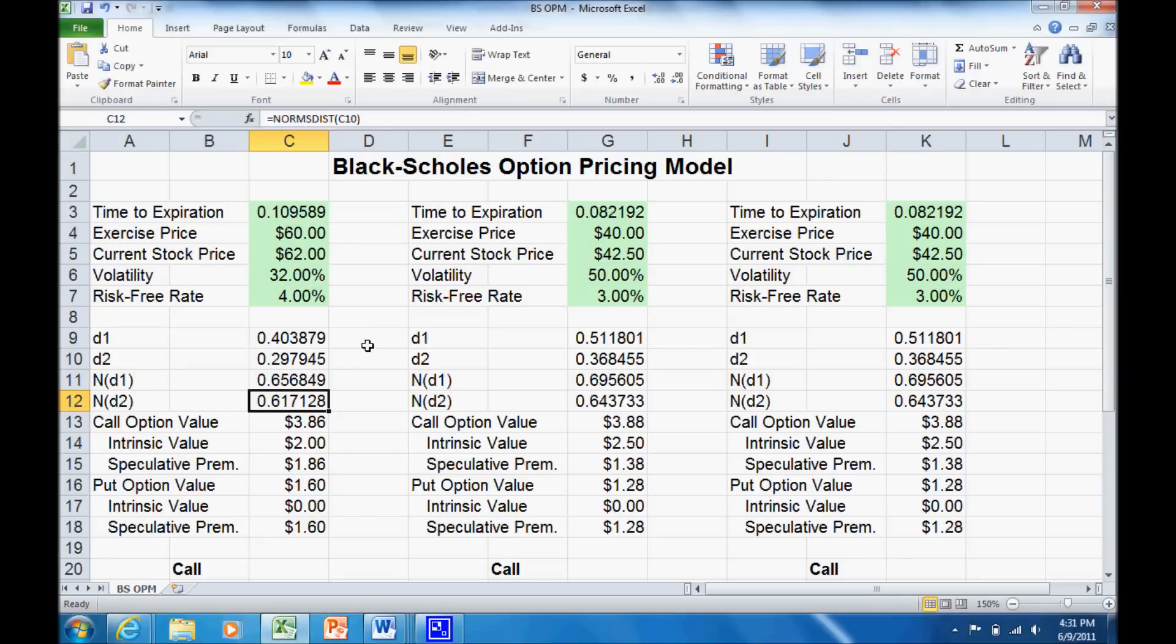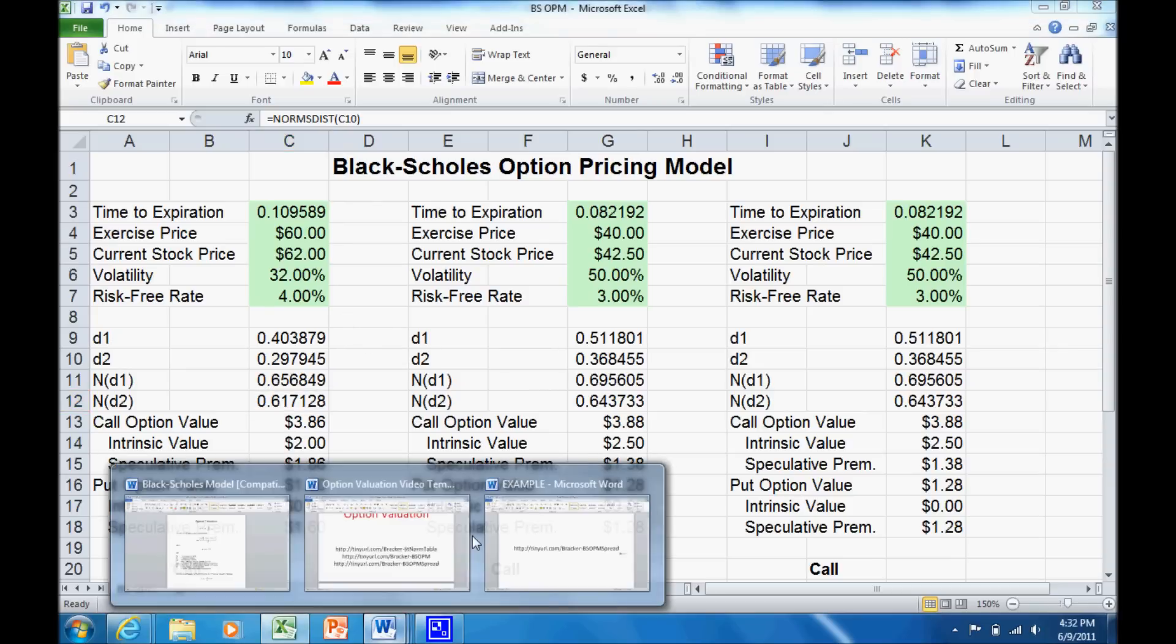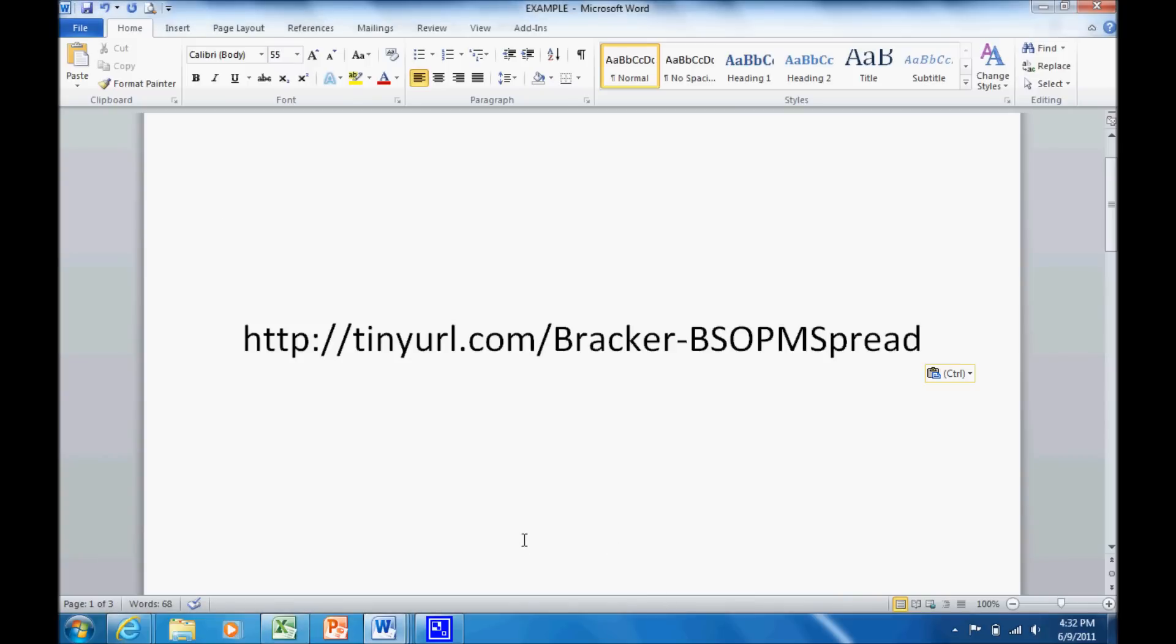This is a spreadsheet that I put together to go through the Black-Scholes option pricing model. If you're interested in downloading this spreadsheet, you can download it to follow along with the video or just to use on your own. I posted it up in Google Docs. This is the address. You can go ahead and pause the video right now if you'd like and download that spreadsheet.